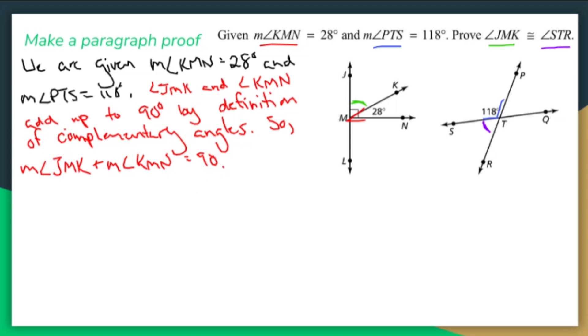Already my paragraph proof isn't falling apart. It's just much worse than it has to be. Now if that's the case, what I can do is I can replace measure of KMN with 28.